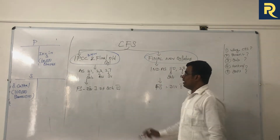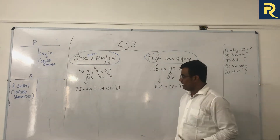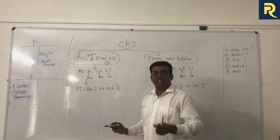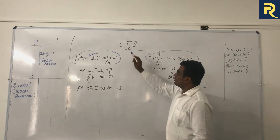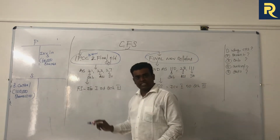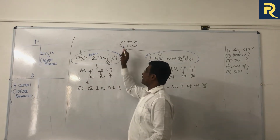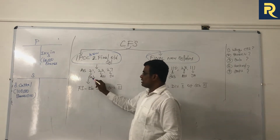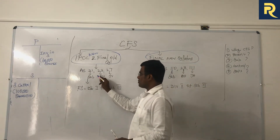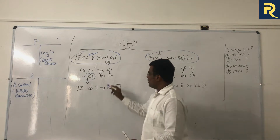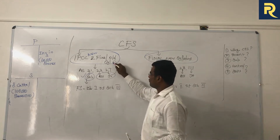In a certain topic - Consolidated Financial Statement - as you are all aware, the existing standard is covered for IPCC and final old syllabus. Ind AS is applicable for final new syllabus. Even though the topic name is CFS, with respect to existing AAS - AAS 21, 23, 27 - which talks about consolidated financial statement: AAS 21 for subsidiary, AAS 23 for associates, AAS 27 for joint venture. But at IPCC level, subsidiary alone is covered; associates and joint venture are not covered. Even in new syllabus, this is applicable only for final old syllabus.